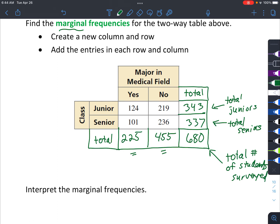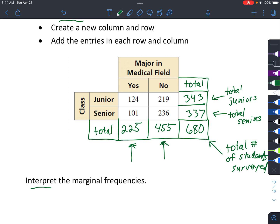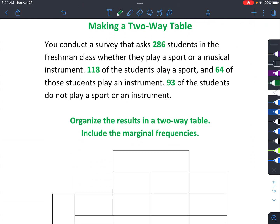It goes along with the same thing. So looking down the columns, this would be the total of people majoring in a medical field. And this one would be the total of people not majoring in a medical field. And that's how we interpret the marginal frequencies. So you'd say 225 people are majoring in the medical field. And that would be how you interpret that.